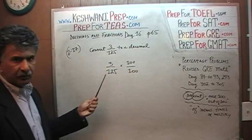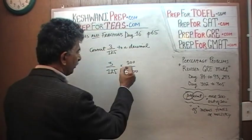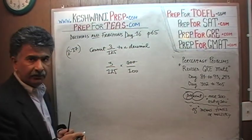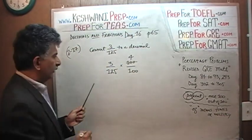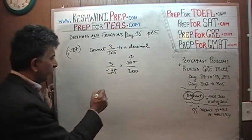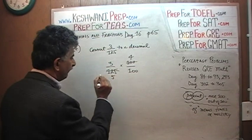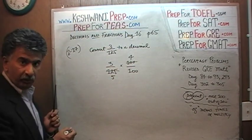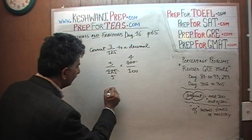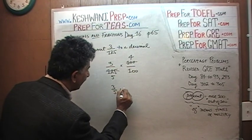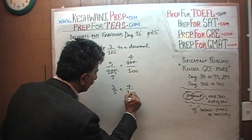Now let's divide top and bottom by 25. How many 25s in 100? 100 has four 25s. How many 25s in 125? It has 5. So what it boils down to is 3 over 5 times 4 over 100.